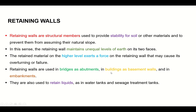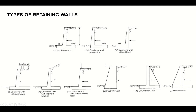Retaining walls are used in bridges as abutments, in buildings as basement walls, and in embankments. They are also used to retain liquids, as in water tanks and sewage treatment tanks. A simple cantilever retaining wall consists of a vertical member (the stem or arm) and a horizontal slab (the foundation), which is divided into toe and heel portions.